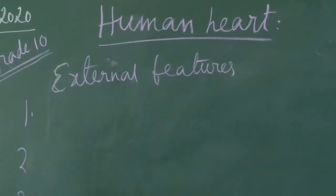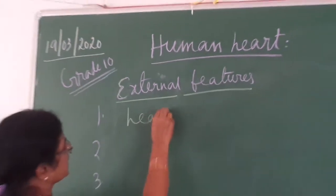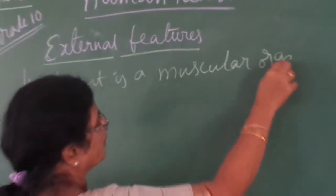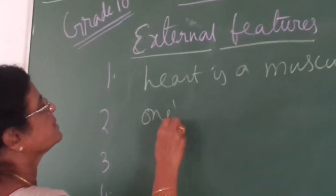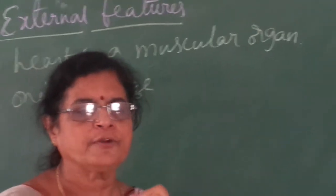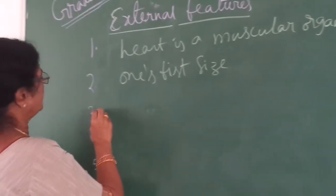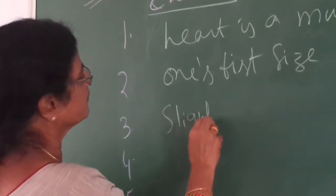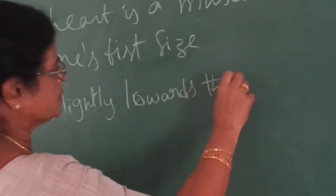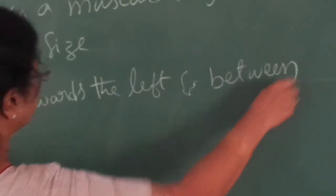You learned about double circulation. Now, the external features of the human heart. The heart is a muscular organ. Its size is one's fist size — if you keep your fist like this, that is your fist. Whoever you are, your fist size is the heart size. And it is located slightly towards the left, between the two lungs.